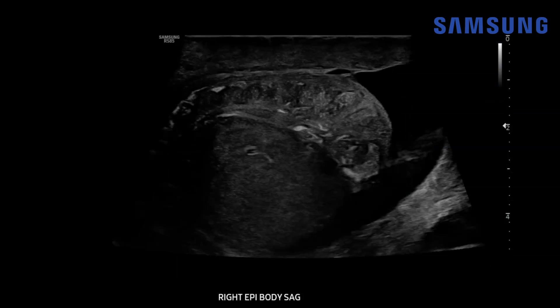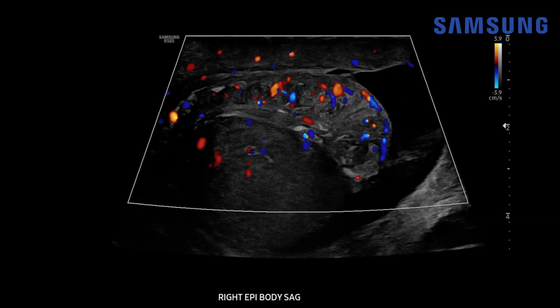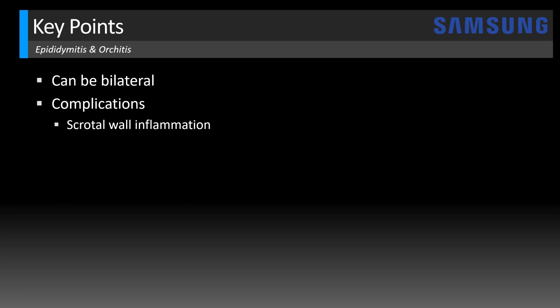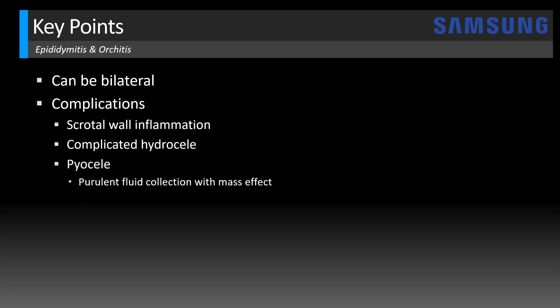Looking more closely at the right epididymis, it is also heterogeneously enlarged and hypoechoic with increased vascular flow. Epididymitis and orchitis can be bilateral — as in this case — and that's usually a marker of more severe disease. Associated complications with advanced infection include scrotal wall inflammation with scrotal wall edema and hyperemia, usually indicating cellulitis. Complicated hydroceles can also occur, containing debris and septations, but should be differentiated from a pyocele, which is a purulent fluid collection with mass effect in the scrotal sac.